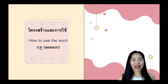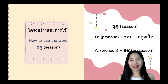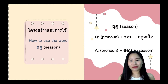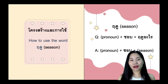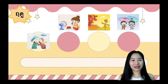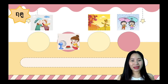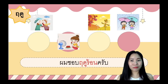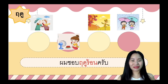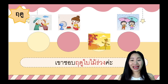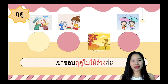Now let's see how to ask about seasons. To ask 'what season do you like?' in Thai, put the pronoun first, then 'chop,' followed by 'reudoo arai.' To answer, say your pronoun, then 'chop,' then the season. For example: 'Dichan chop reudoo nao ka' — I like winter. 'Phom chop reudoo ron khrap' — I like summer. And 'Khao chop reudoo bai mai ruang' — he likes fall or autumn.